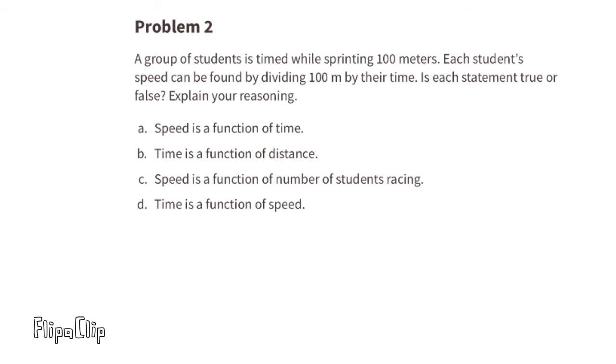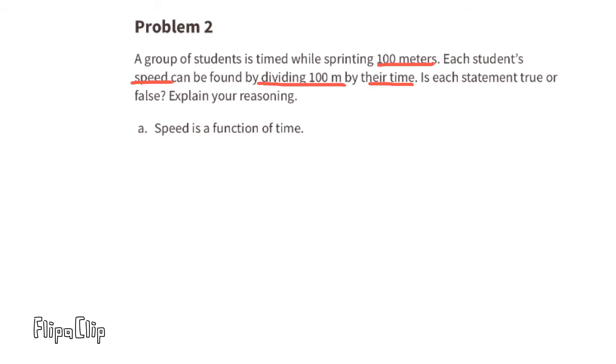Problem number 2. A group of students is timed while sprinting 100 meters. Each student's speed can be found by dividing 100 meters by their time. Is each statement true or false? Explain your reasoning.